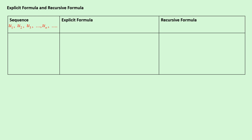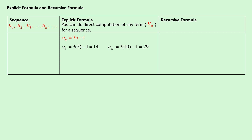In this video I want to discuss explicit formula and recursive formula. With an explicit formula you can do direct computation of any term in a sequence. For example, with this explicit formula, if I ask you to find the fifth term you just substitute n with five.